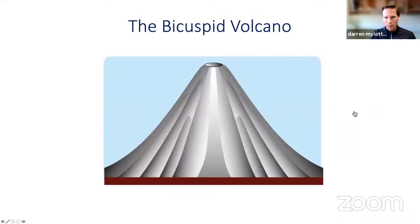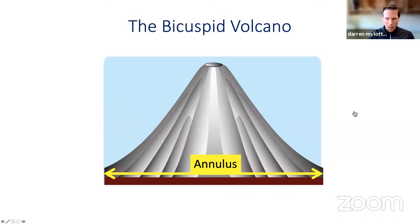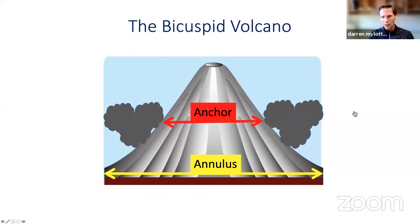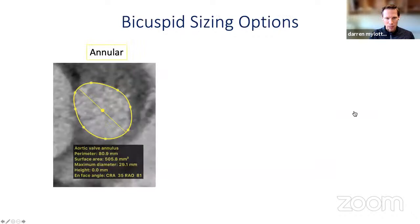Moving on to bicuspid sizing — a lot has been made of this. The reason bicuspids are or perhaps should be sized somewhat differently to tricuspid aortic valves comes down to the concept of the bicuspid volcano. In tricuspid aortic valves, we size and anchor the device at the level of the annulus. On the other hand, because we have a raphae or dense leaflet calcification further up in bicuspids, we tend to anchor and seal in a supraannular space or at the level of the leaflet — and this discrepancy between the annulus and the supraannular space creates the difficulty for bicuspid sizing.